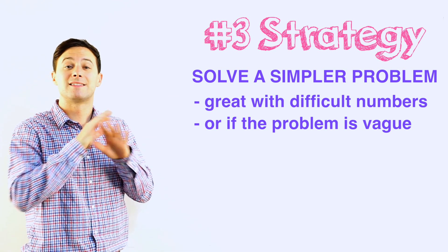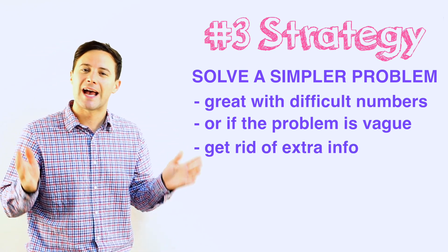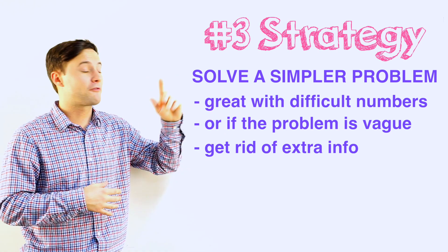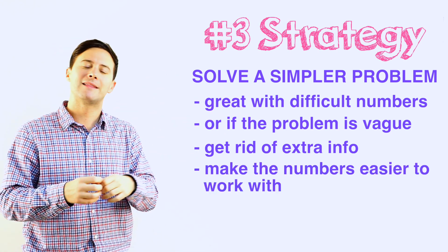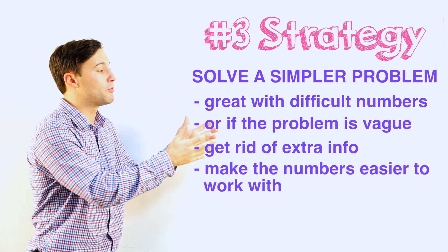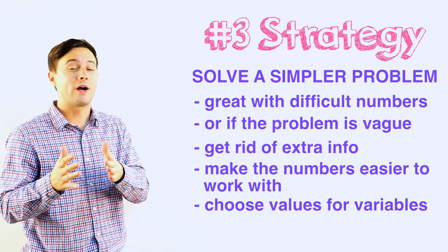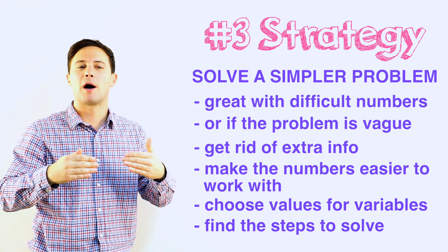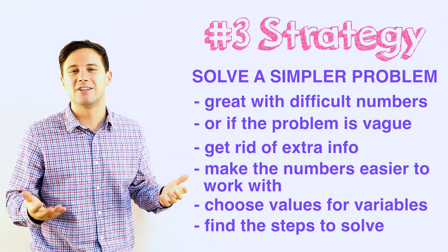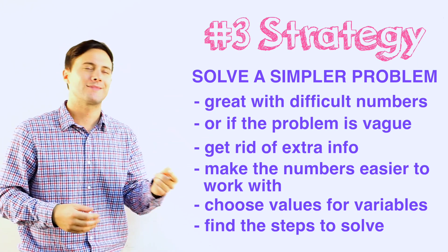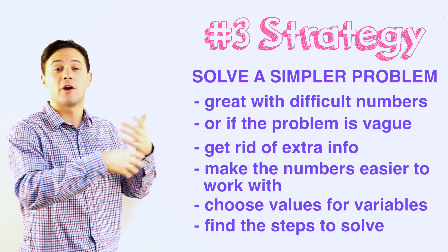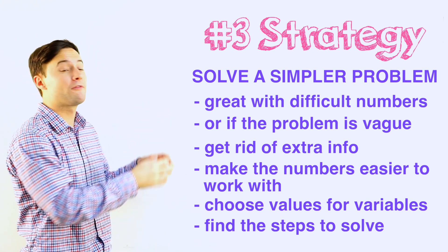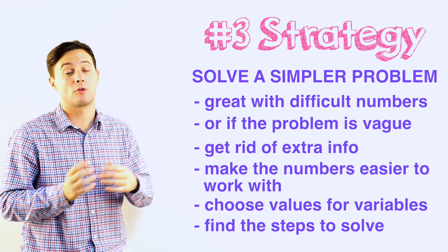The first part is you want to make it simpler. To do that, cut out any extra information that you don't need. Once you've done that, if you have difficult numbers like fractions, decimals, or mixed numbers, just make them easier — make them whole numbers. If you have a lot of variables or it's a very vague problem, you want to substitute: choose some values for those variables. Then once you've done that, solve the problem. Hopefully it's much easier to solve. Once you figure out the steps you need, go back and do it for the original problem with the original numbers or variables.